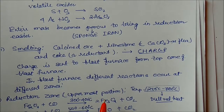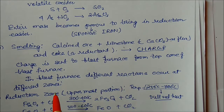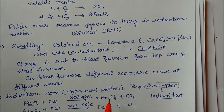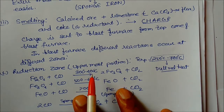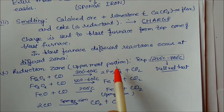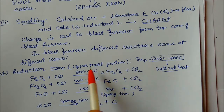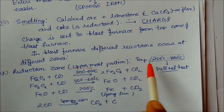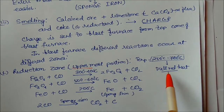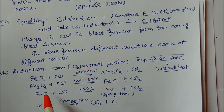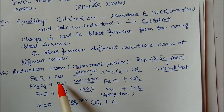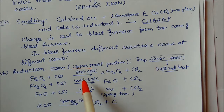We will see each zone one by one. The first zone is the reduction zone, which is the uppermost portion of the furnace. The temperature range here is 250 to 700 degrees centigrade — very low — so this is called dull red heat. Here, sponge iron (Fe2O3) gets reduced by carbon monoxide at 300 to 400 degrees centigrade.